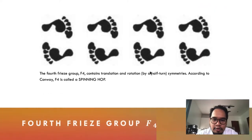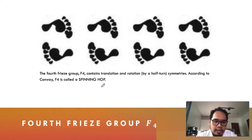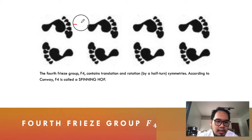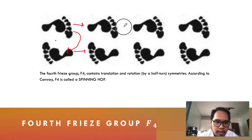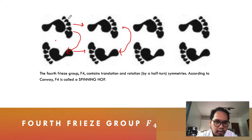The fourth frieze group, F-sub-4, Conway called the 'spinning hop.' It contains translation and rotation by a half-turn symmetry. You translate the motif, and there is a certain point about which you rotate the image, then you translate again — rotating 180 degrees — and so on.